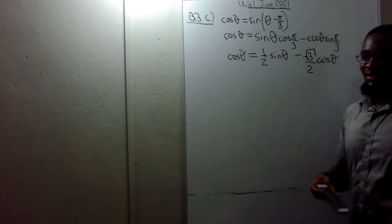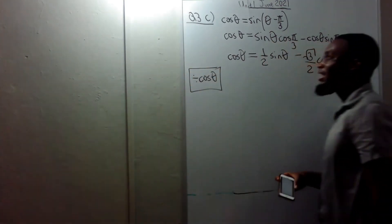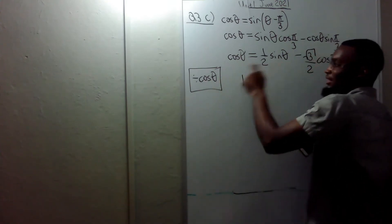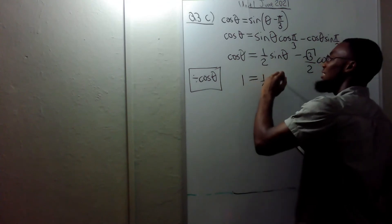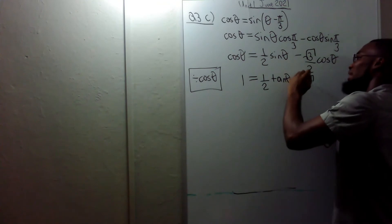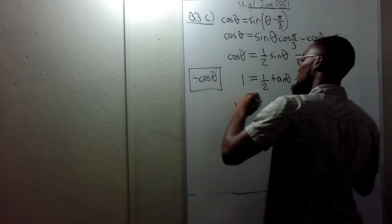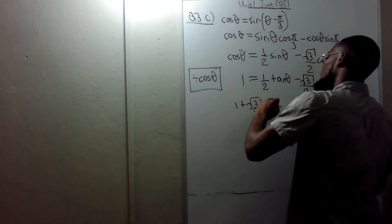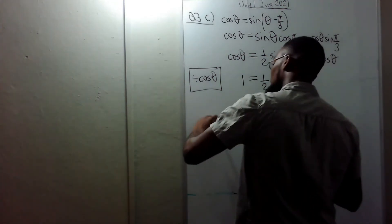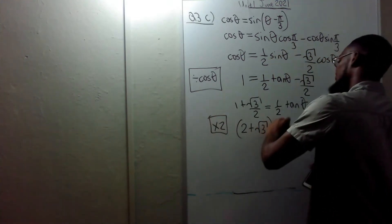Divide through by cosθ: cosθ/cosθ = 1, sinθ/cosθ = tanθ. So (1/2)tanθ − √3/2 = 1. Bringing √3/2 over: 1 + √3/2 = (1/2)tanθ. Multiply through by 2: 2 + √3 = tanθ.